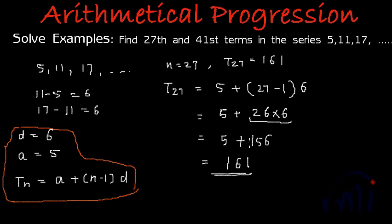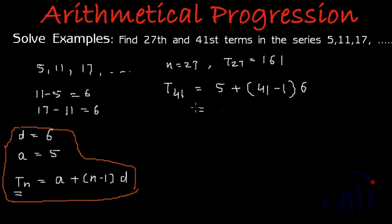What do we have to find next? Next we were supposed to find the 41st term. So if I put 41 in place of 27, we will find the 41st term. T_41 will be 5 plus (41-1) multiplied by 6. I have substituted 41 in place of n in this formula.